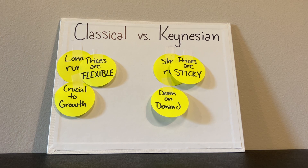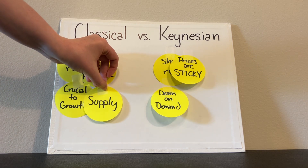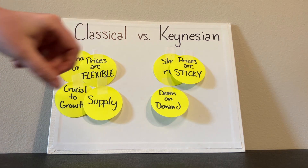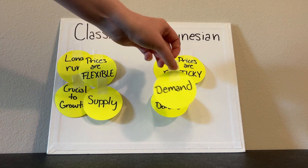The key side of the market for classical is supply, whereas for Keynesian, it is demand.